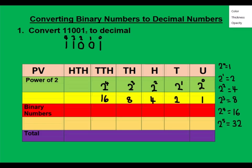The next thing is to fill in the binary numbers. Starting from the back, we have one, zero, zero, one, and one. The next thing is to multiply the binary numbers by their place values. One times 16 gives 16. One times eight is eight. Zero times four gives zero. Zero times two gives zero. One times one gives one.